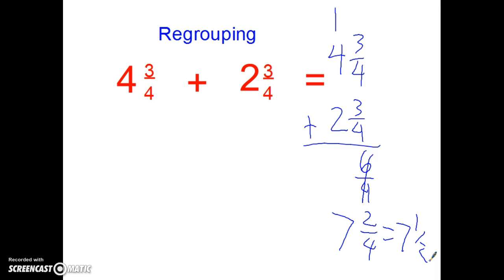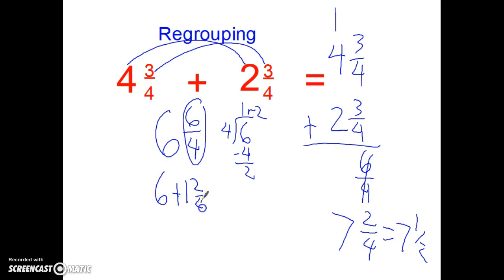Some people just like to add and go, let me add my whole parts. 4 plus 2 is 6. Let me add my fraction parts. 3 fourths plus 3 fourths is 6 fourths. And then they look at it and go, okay, the 6 fourths, I need to change that because it's improper. 4 goes into 6 one time. It's a remainder of 2. Oh, so this part right here is really 1 and 2 fourths. So I got 6 plus 1 and 2 fourths. And again, it equals 7 and 2 fourths, which was really 7 and a half.